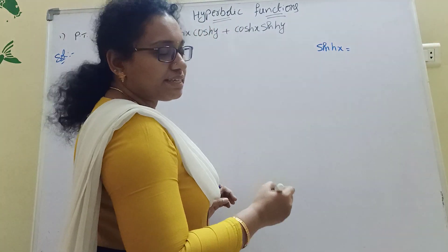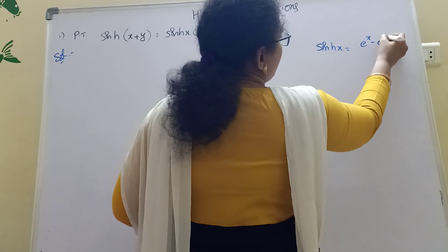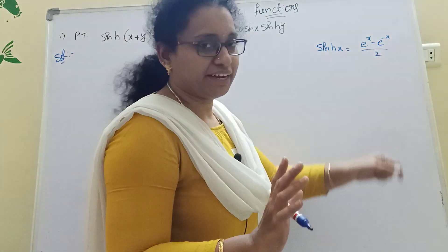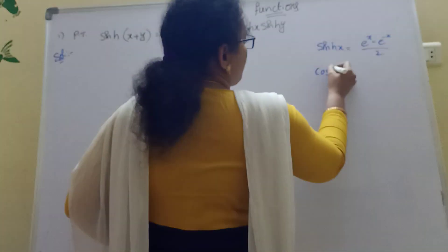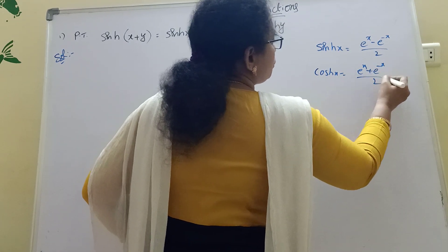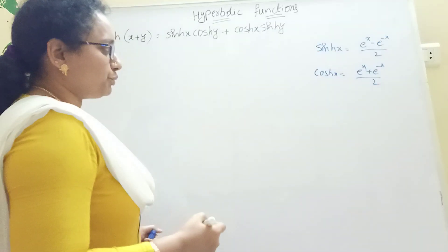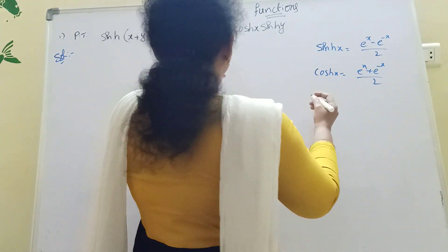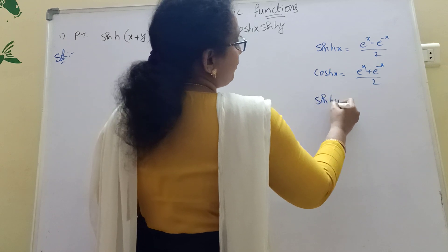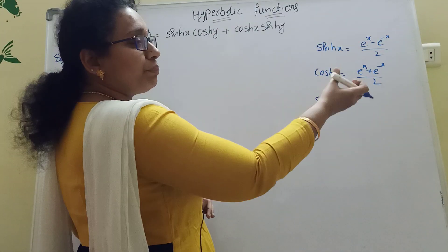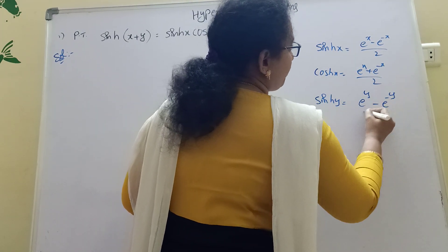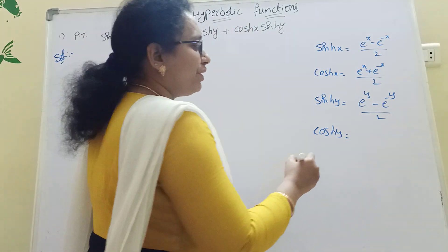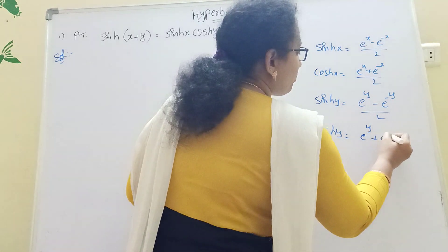sinh(x) is equal to (e^x minus e^(-x)) divided by 2. What is the formula? e^x minus e^(-x) by 2 — note it is minus. Next, cosh(x) is equal to (e^x plus e^(-x)) divided by 2. Similarly, replacing x with y: sinh(y) equals (e^y minus e^(-y)) by 2, and cosh(y) equals (e^y plus e^(-y)) by 2.